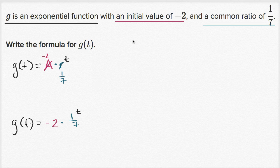And hopefully this makes sense. Initial value is this number. Well, if t equals zero, then one-seventh to the zeroth power is one. And so g of zero, you could view that time as being equal to zero if you view t as time, would be equal to negative two.